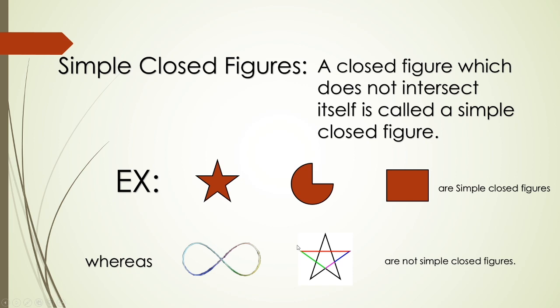Whereas for these examples, this is a closed figure, but it is intersecting itself here, so this is not a simple closed figure. It may be a closed figure, but it is not a simple closed figure because it is intersecting itself.